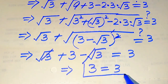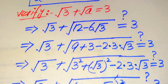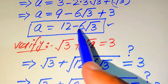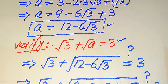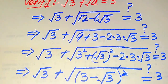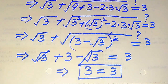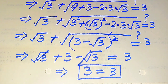This confirms that the value a equals 12 minus 6 times square root of 3 satisfies our question statement. This is the final answer of this question. Thank you so much for watching this video. Please subscribe to my channel for more exciting videos.